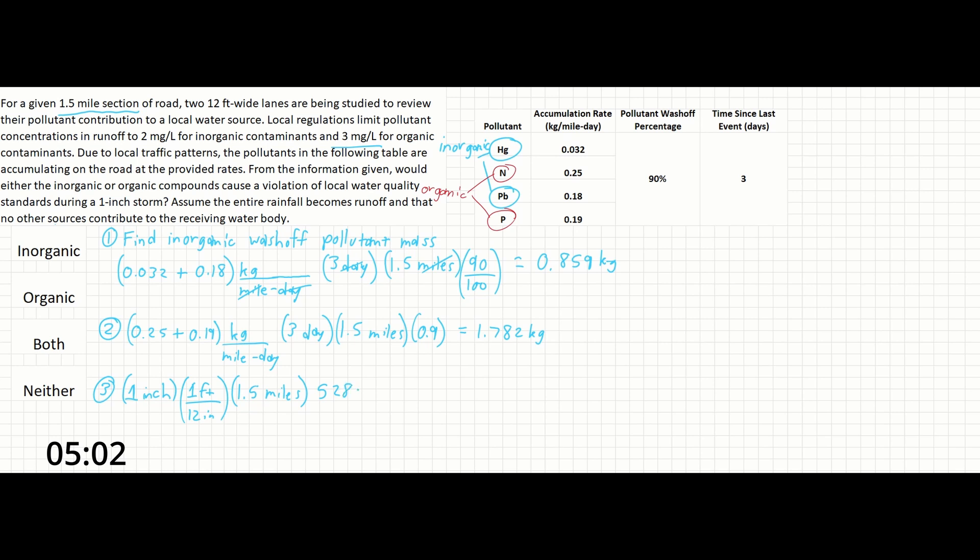Times 5,280 feet in a mile, times 2 lanes given in the problem statement each lane being 12 feet wide.